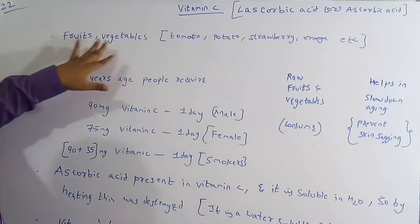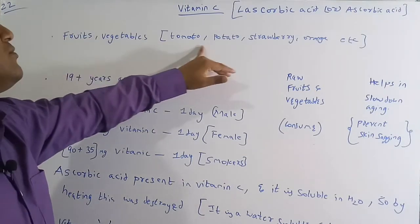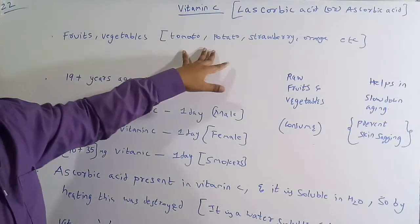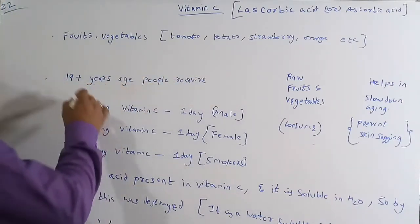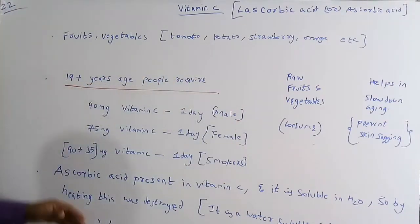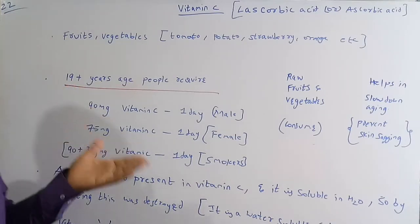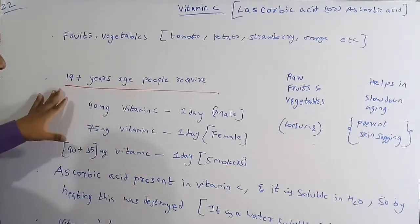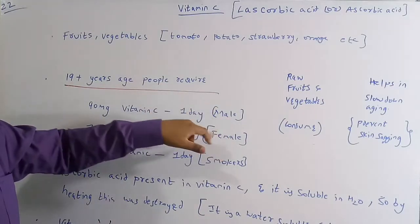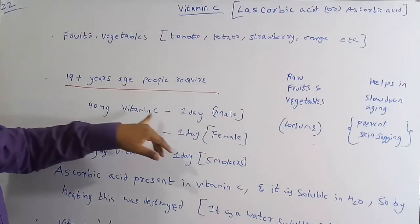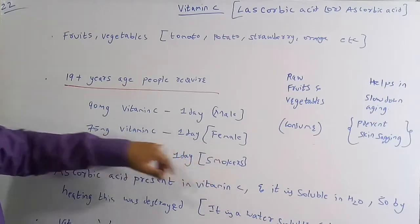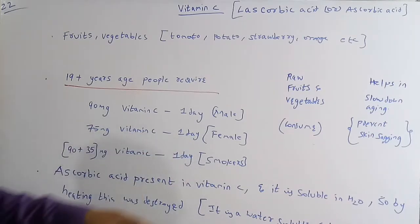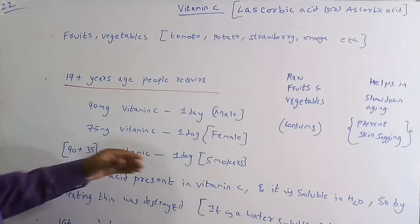Vitamin C is present in fruits and vegetables — for example, tomato, potato, strawberry, orange, and so on. As per the latest data, for people above 19 years of age, a male has to consume 90 milligrams of Vitamin C per day, and a female has to consume 75 milligrams of Vitamin C per day.